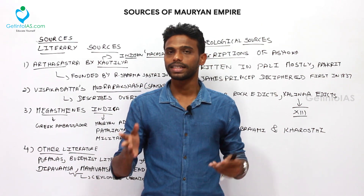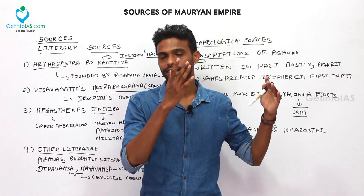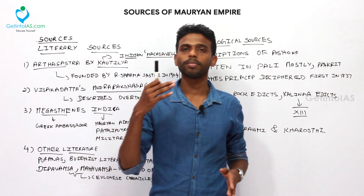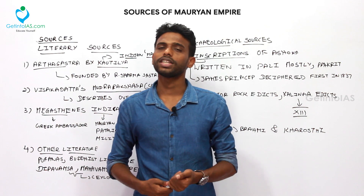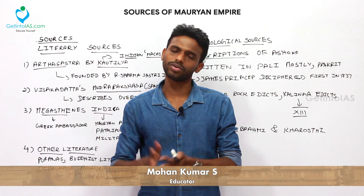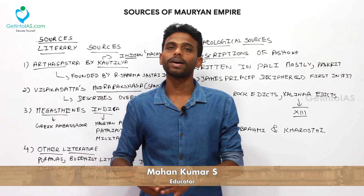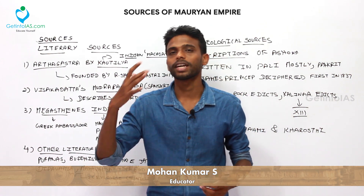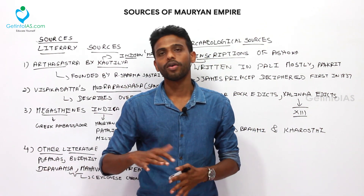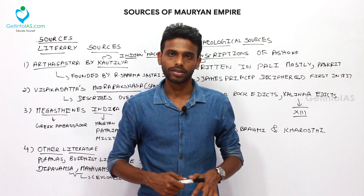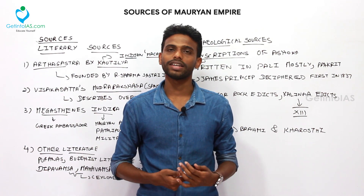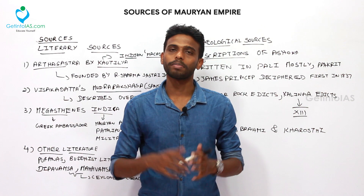There were two types of sources, as discussed in the reconstructing the past lesson: literary sources as well as archaeological sources. For the Mauryan administration, there were many literary sources compared to archaeological sources. Though archaeological sources also exist, the literary sources gave a clear explanation of the Mauryan administration, the court of law, and everything. We are now moving on to the literary sources which led to the findings of Mauryan administration.